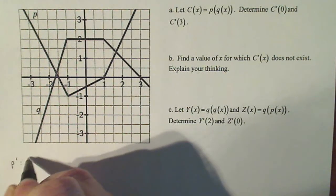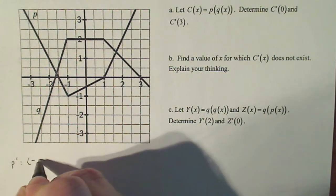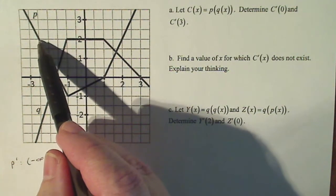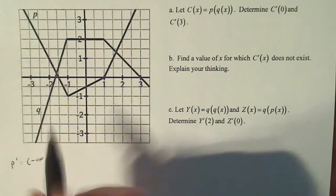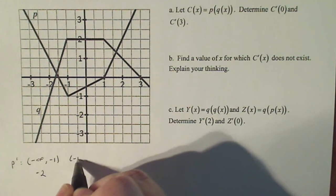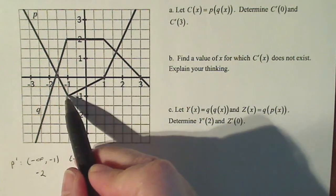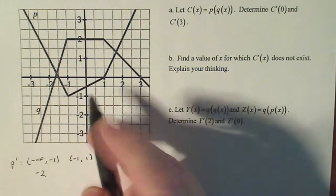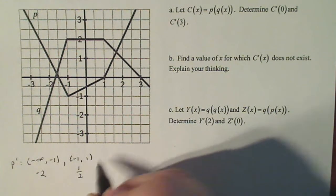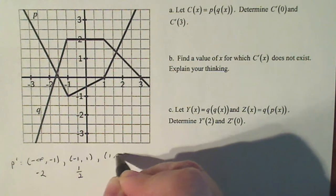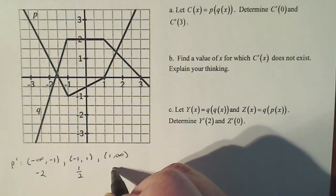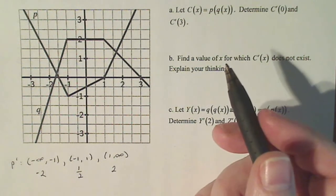For p prime, the derivative over the interval from negative infinity to minus one — I look at the slope and go down two and over one, so that's a slope of minus two. From minus one to one, I go up one and over two, so that has a slope of one half — the derivative of p on that interval is one half. And from one to infinity, I go up two and over one, so the slope is two, meaning p prime is two over that interval.